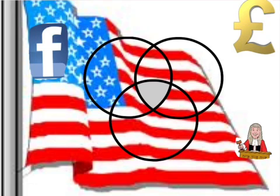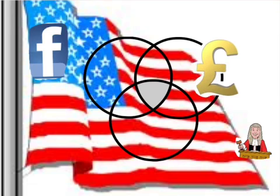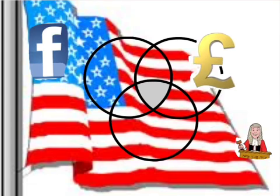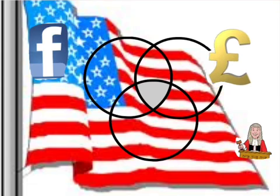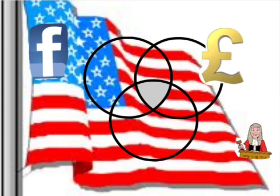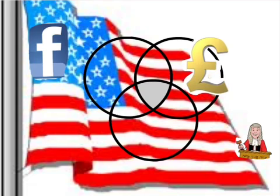I want you to set this out in a Venn diagram. Each circle represents a different aspect of society. One represents money, so anything you'd think has anything to do with money, put in one of these circles.